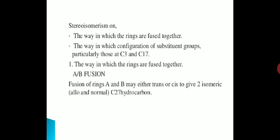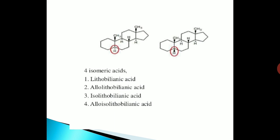The way in which the rings are fused together and the configuration of the substituent groups, particularly those at C3 and C17, is important. Fusion of rings A and B may be either trans or cis, giving two isomeric — that is, allo and normal — C27 hydrocarbons, and four isomeric acids: lithocholic acid, allo-lithocholic acid, isolithocholic acid, and allo-isolithocholic acid.